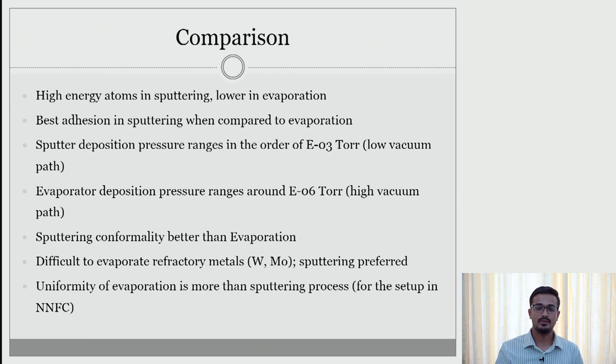Let us have a comparison between sputtering and e-beam evaporation. In sputtering tool we have high energy atoms and in evaporation we have low energy atoms. Coming to adhesion, sputtering gives us the better adhesion by impingement of the deposition pressure compared to e-beam evaporation. The sputter deposition pressure ranges are in the orders of 1E-3 to 1E-2. Evaporation deposition pressure ranges from 1E-6 to 1E-7. So as we can see, 1E-3 and 1E-6 are two different ranges of pressure with low vacuum path and a high vacuum path. Sputtering gives us better conformal coatings than e-beam evaporation. The uniformity of evaporation is more in sputtering process for all the setup that we have in NFC.